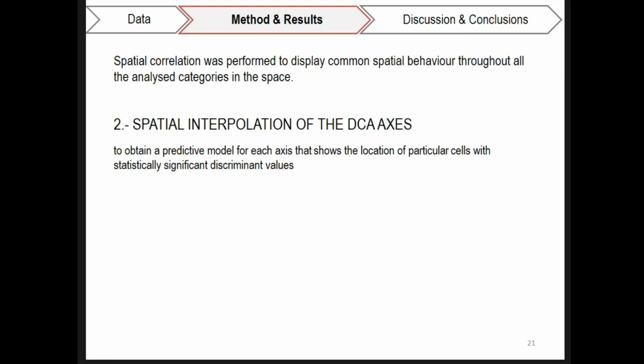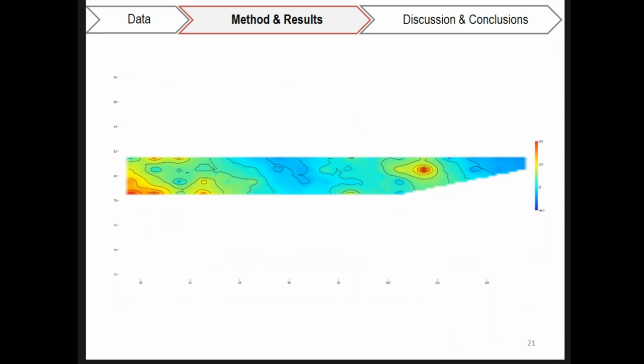After, mapping techniques were applied to the DCA row scores using the spatial coordinates. Through these, a spatial interpolation that considered a predictive model for each axis was obtained. The predictive model shows the location of particular cells with statistically significant discriminant values. In reddish and yellowish, it is observed the distribution of Mytilus galloprovincialis and its associated categories. And in bluish, it is represented the distribution of fauna remains and its spatially associated categories.